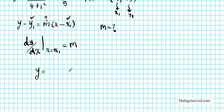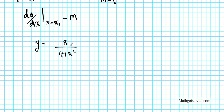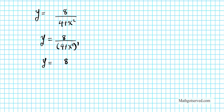Let's rewrite the equation y equals 8 over (4 plus x squared). We could use the quotient rule, but instead let's rewrite it so we can apply the power rule. We write it as y equals 8 times (4 plus x squared) to the negative 1. Since we reciprocated the denominator, the power becomes negative 1. The 8 is a constant, so we apply the constant rule and focus on differentiating the main component.